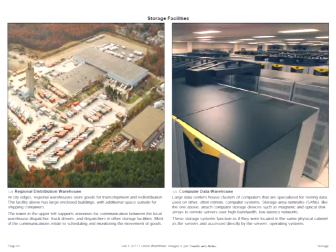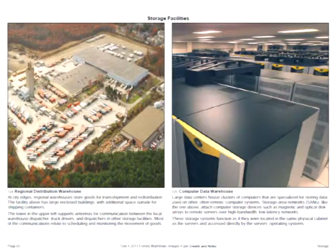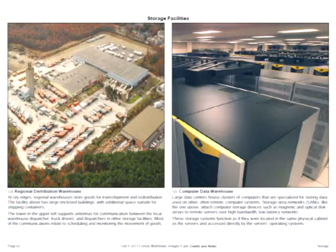There's a photograph of a regional distribution warehouse with lots of square footage under roof, more storage in containers in the parking area, and a tower with microwave antennas to communicate with dispatchers and truck drivers. On the right is a storage area network — basically a warehouse for storing data and keeping it backed up, accessible over very high-speed dedicated lines to computer systems in other parts of the country.